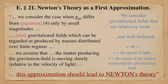In his 1916 paper, section 21 is entitled, translated into English, Newton's Theory as a First Approximation. Let's see what it says.